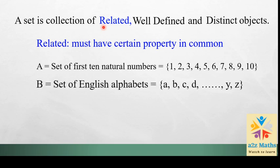Another example: a set of English alphabets is A, B, C, D going till Z, so all English alphabets are part of this set. No other alphabet can be included. Let's take another example: set C = {sparrow, crow, pen}. The first two — sparrow and crow — are birds, but how is pen linked with them? The objects are not related; they don't share a common property. So collection C cannot be a set.